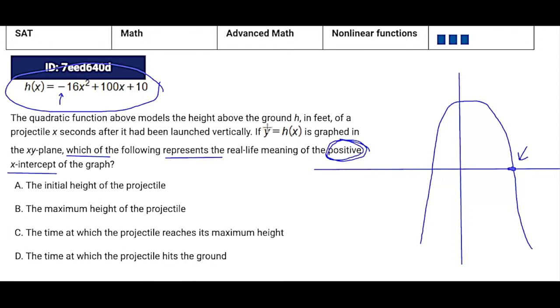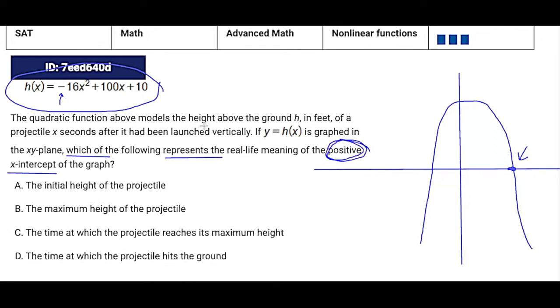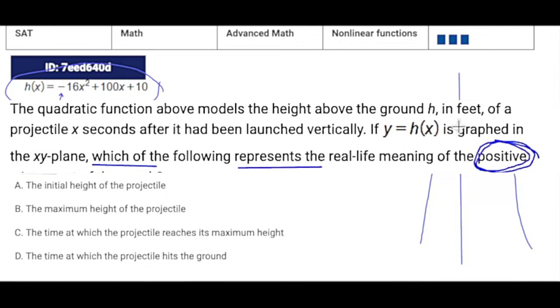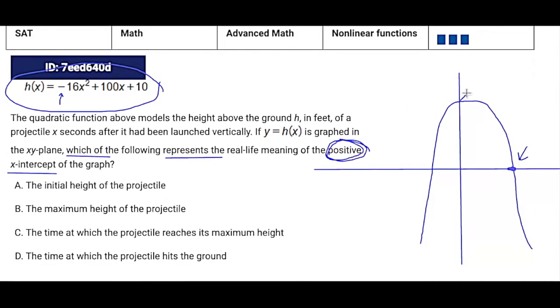Then when we look at the rest of the problem, we can try to imagine what this actually looks like. So it says it's modeling the height of a projectile that has been launched vertically. Basically, this thing is flying up and then it's coming down. So the x-intercept would be when it hits the ground, right? D. Easy peasy.